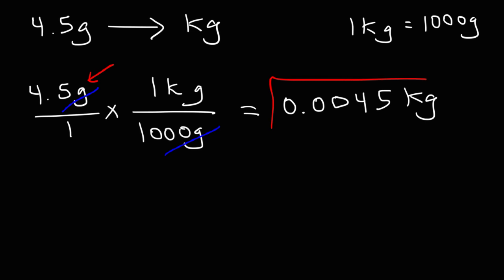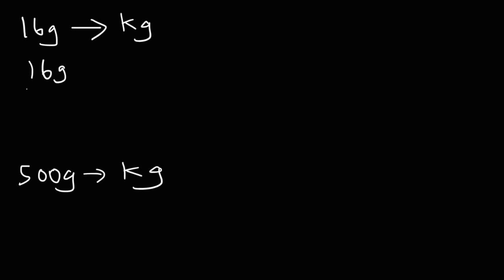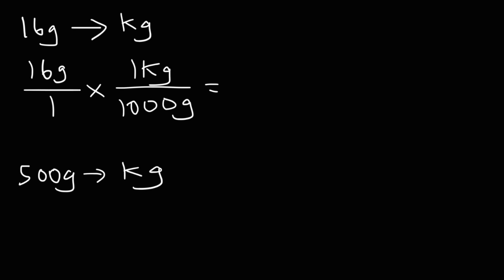So that's how you convert from grams to kilograms. Here are two practice examples: convert 16 grams into kilograms, and convert 500 grams into kilograms. For the first one, we write 16 grams over 1, put 1,000 grams on the bottom and 1 kilogram on top of the second fraction. The units cancel, and it's 16 divided by 1,000 — move the decimal point three units to the left — giving 0.016 kilograms.